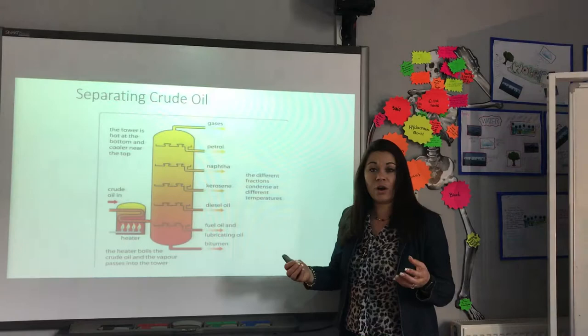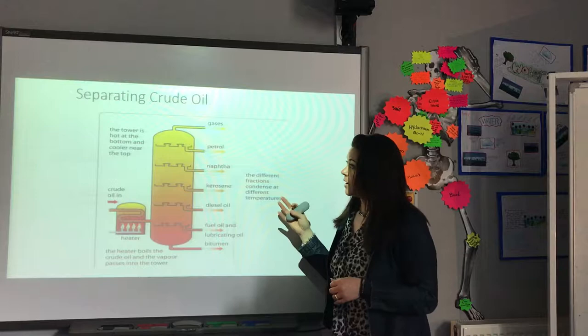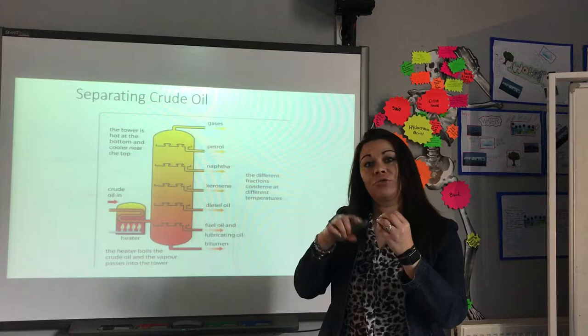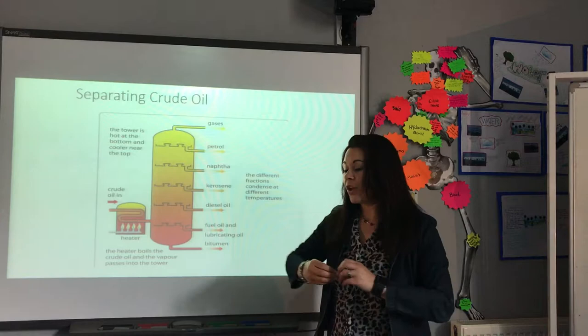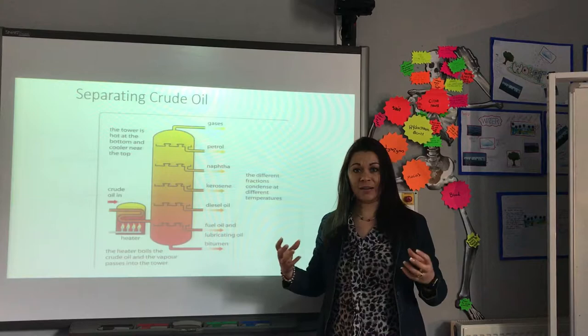So if you turn on your cooker or your fire at home, methane is what comes out. Methane is a short chain hydrocarbon — it has one carbon and four hydrogens around it. At the bottom, bitumen is a much longer chain hydrocarbon. Because of that, you have to give it more energy for it to start to break down.